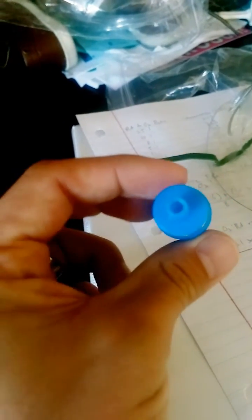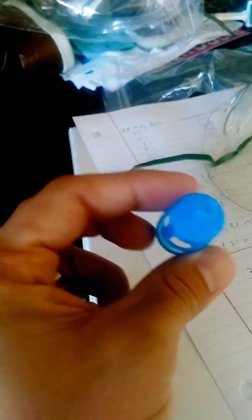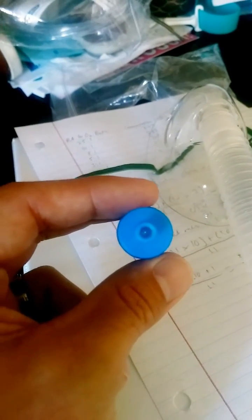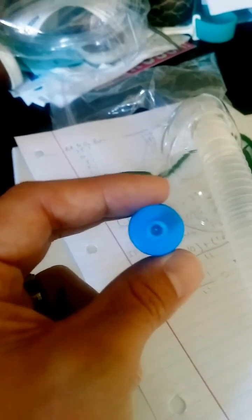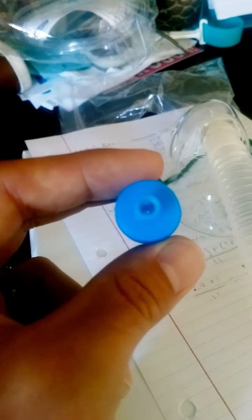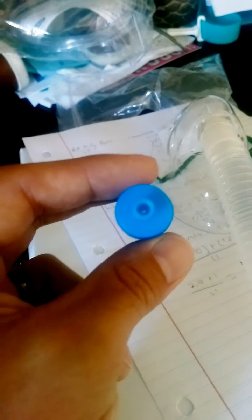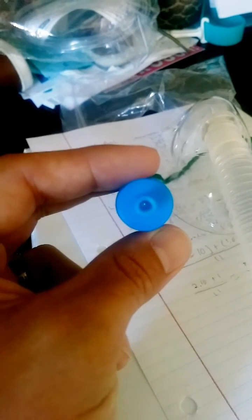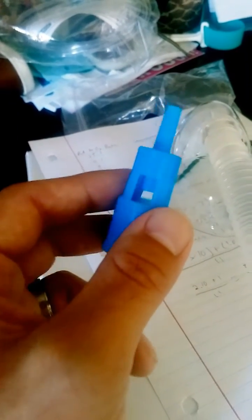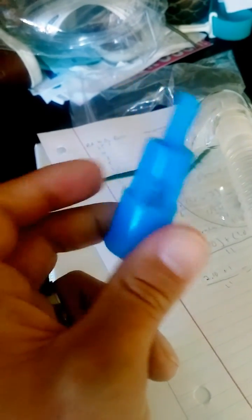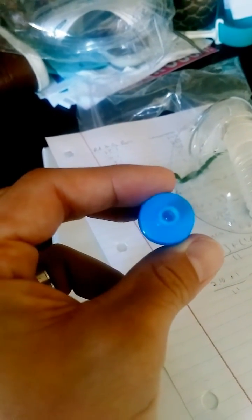If this entrainment adapter for 24% oxygen is on this mask, the flow could be set to 2 liters. It could be set to 15 liters. The FiO2 does not change unless the size of that little tiny hole in there is increased or decreased. So flow never affects FiO2, it's just how fast they're getting the air, but it doesn't actually change the fraction of inspired oxygen.